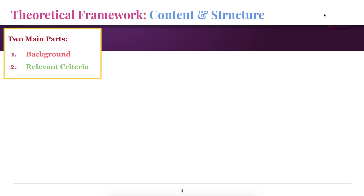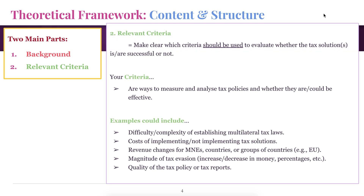The second part of your theoretical framework is the relevant criteria, and this is obviously very important because you're going to apply these criteria in your analysis. You need to make clear which criteria should be used to evaluate whether the tax solution is successful or not. So if you're asking the question, to what extent should corporations make their tax information publicly available, you should find criteria that evaluate this specifically — what helps us decide whether it's going to be good or not for public disclosure? Your criteria are ways to essentially measure and analyze tax policies and whether they are or could be effective.